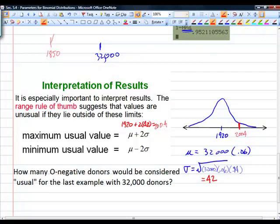To get the minimum usual value, we would look at 1920 minus 2 times 42, which is 1836. If I got 1,835 O negative blood donors out of the 32,000, I would consider that an unusually low number. Notice our 1850 was in the usual region. Anything between 1836 and 2004 is considered to be a usual or expected value. Anything beyond the 1836 or the 2004 would be unusual.